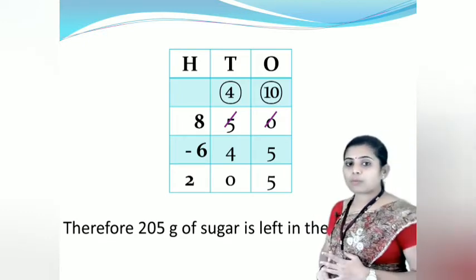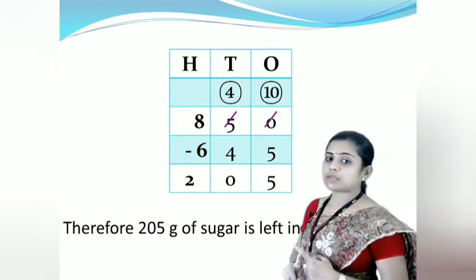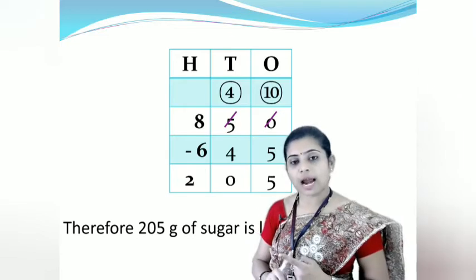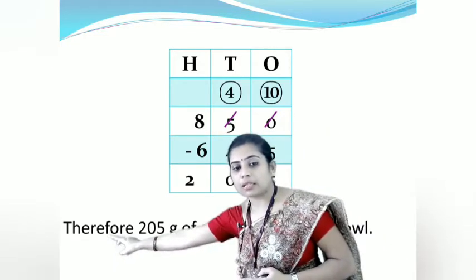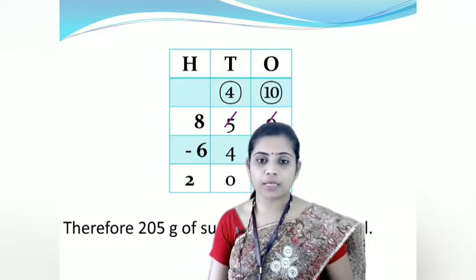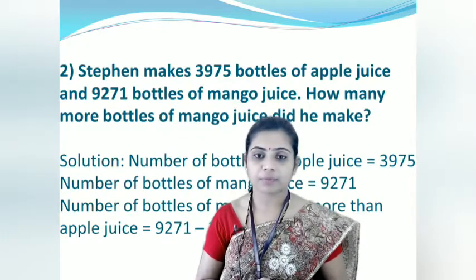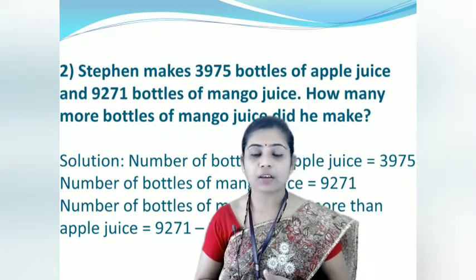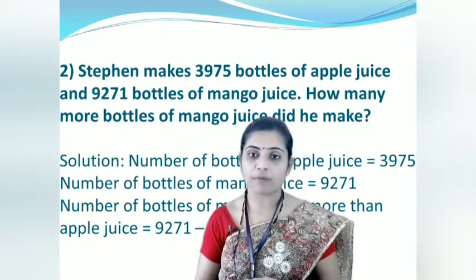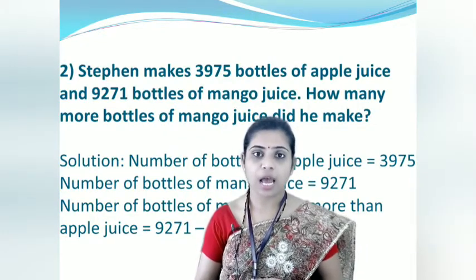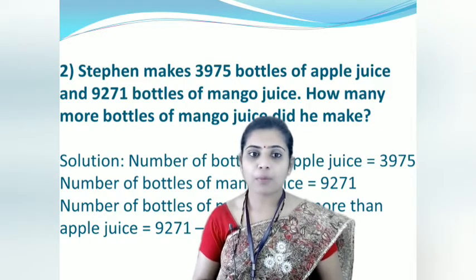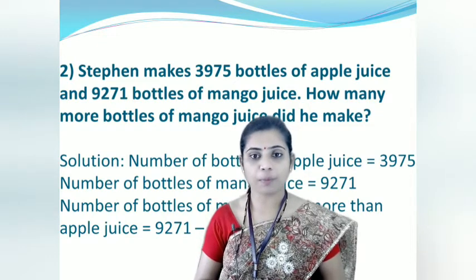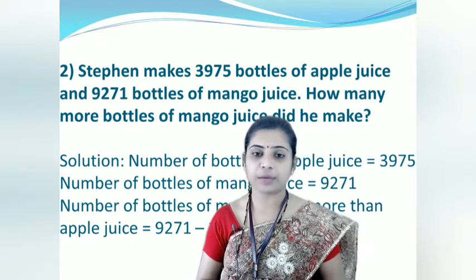Remember, word problems always begin with the given things and end with the 'therefore' statement. Let's take one more example. Stephen makes 3,975 bottles of apple juice and 9,271 bottles of mango juice. How many more bottles of mango juice did he make?